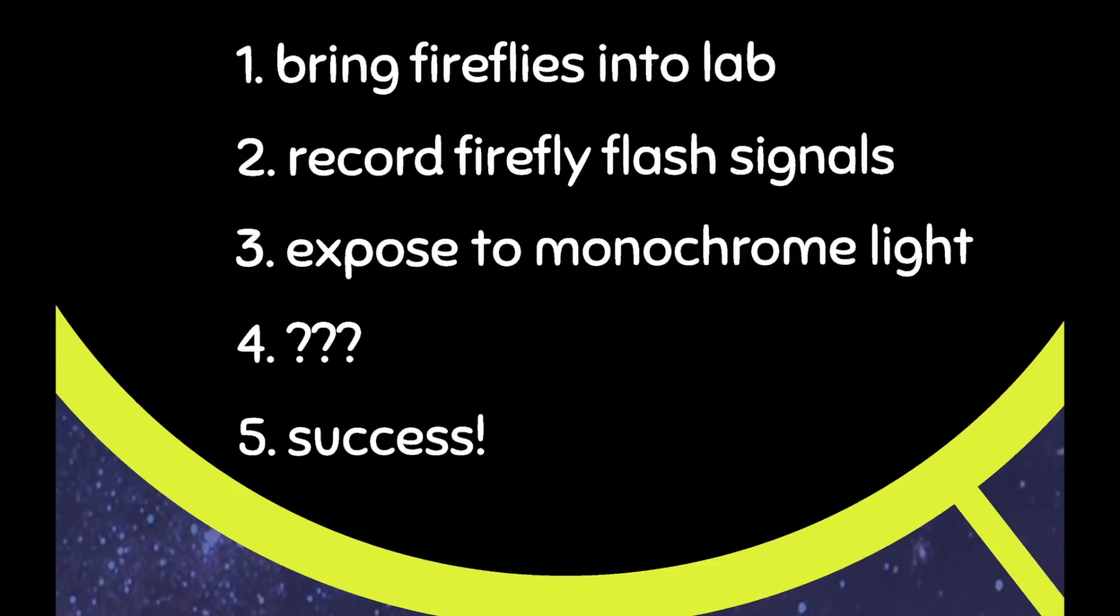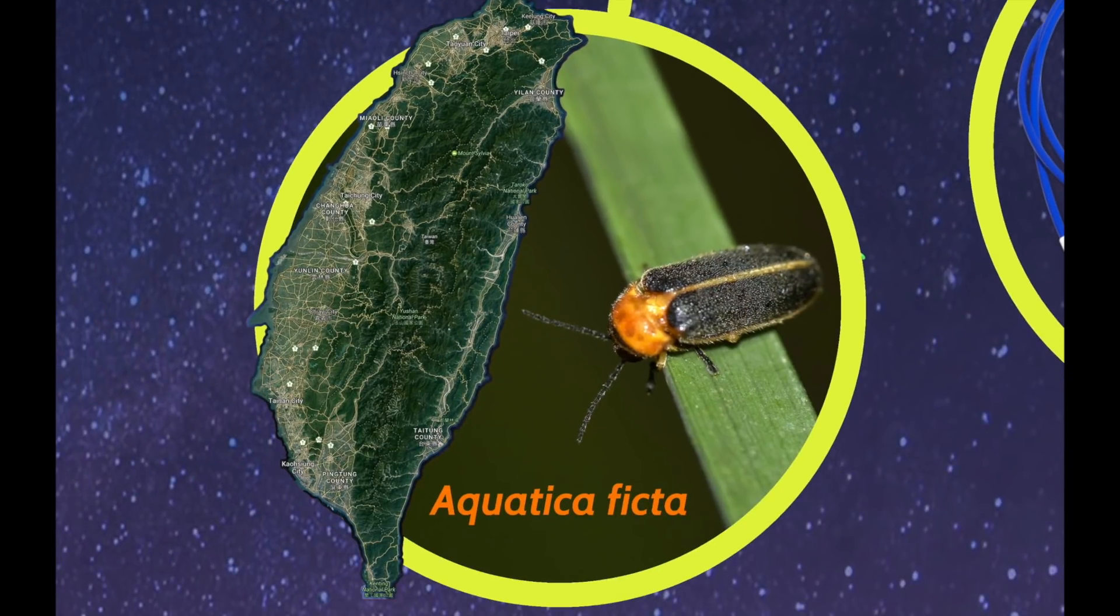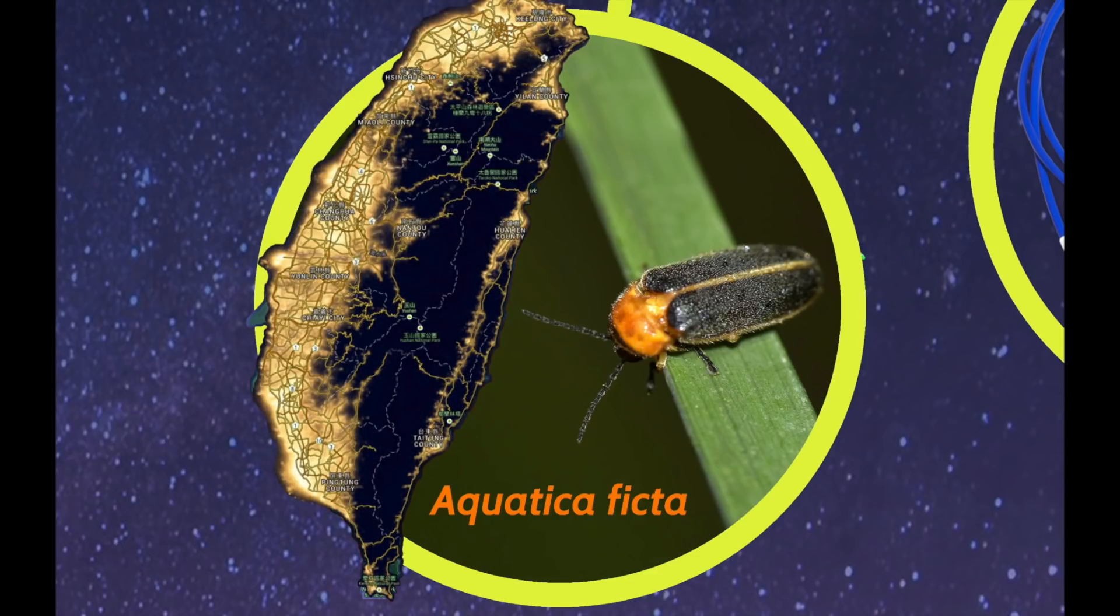So step one was pretty simple. Like I said, I did this research in Taiwan. And I worked on a local species, very, very cute, called Aquatica ficta, or Huangyuanin. Now this species is found all around Taiwan, but it's nocturnal. So its habitat looks a little bit more like this.